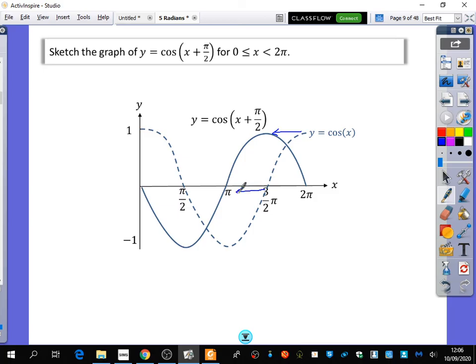There's the cos graph, and it has shifted 90 degrees. Oops, sorry, not 90 degrees. π/2, everything has shifted π/2 along. So it's the same as before, but they've done it in radians.